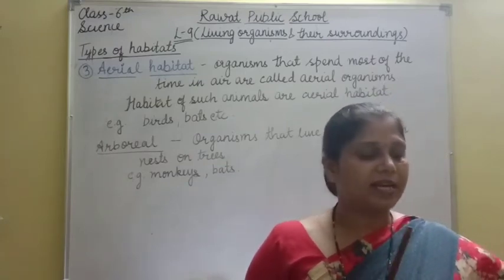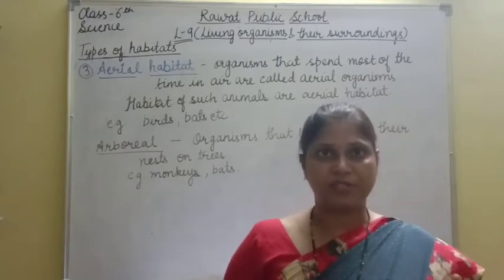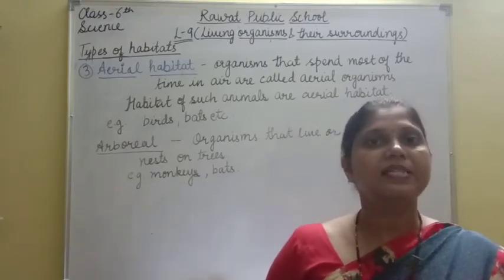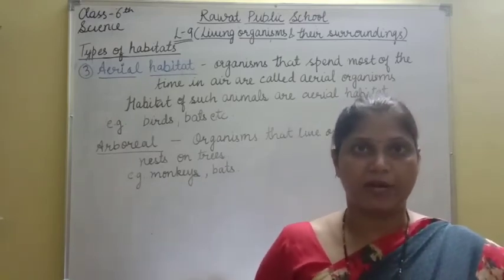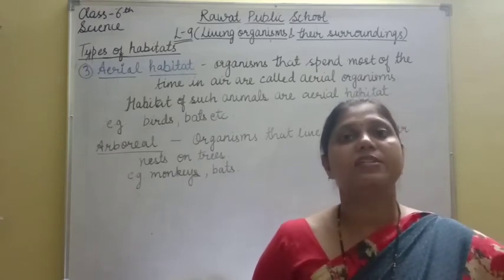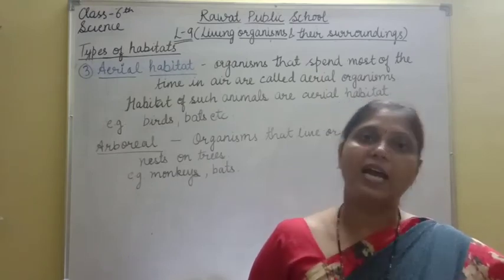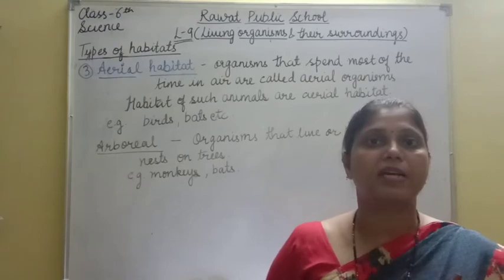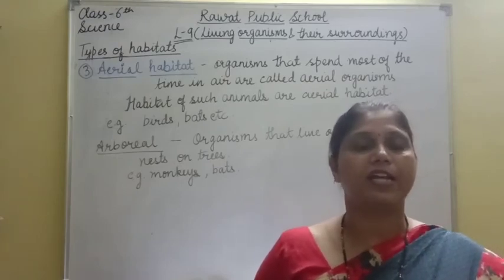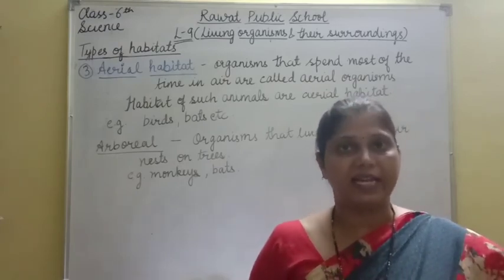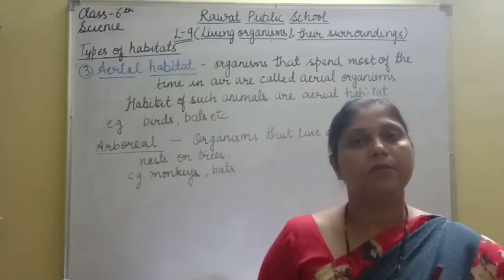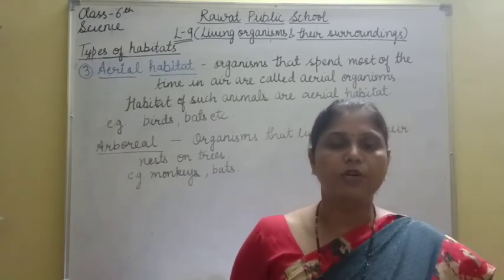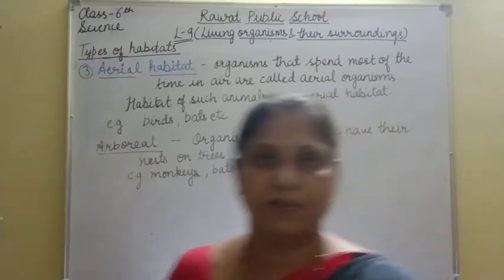So here we have completed the types of habitat. हमने तीन type के habitats पढ़े: terrestrial, aquatic, और aerial — जिसके सब parts में पढ़े. From tomorrow onwards we will start with adaptations — कैसे organism adapt करता है एक particular environment में रहने के लिए. This is all for today's video. Thank you and have a very nice day.